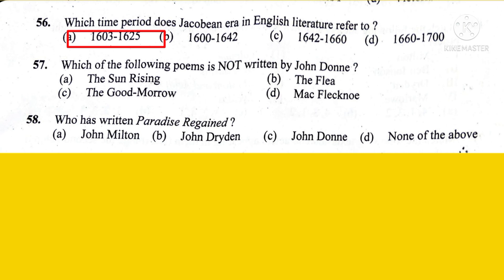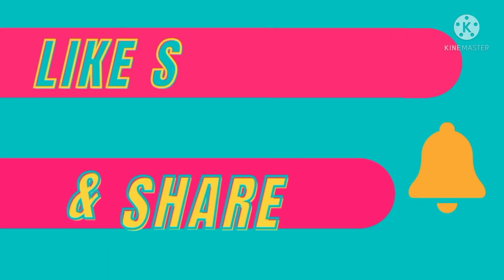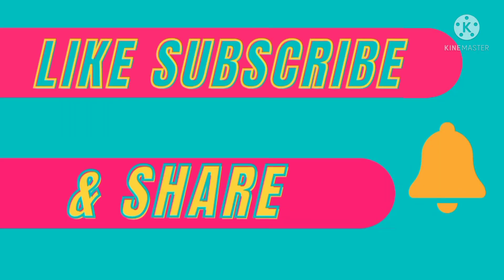Which of the following poems is not written by John Donne? The right answer is Option D, Mac Flecknoe. Who has written Paradise Regained? The right option is John Milton. Paradise Regained was written in 4 books. If you like this video, please hit the like button, subscribe to my channel, and share this video with your friends. Thanks for watching.